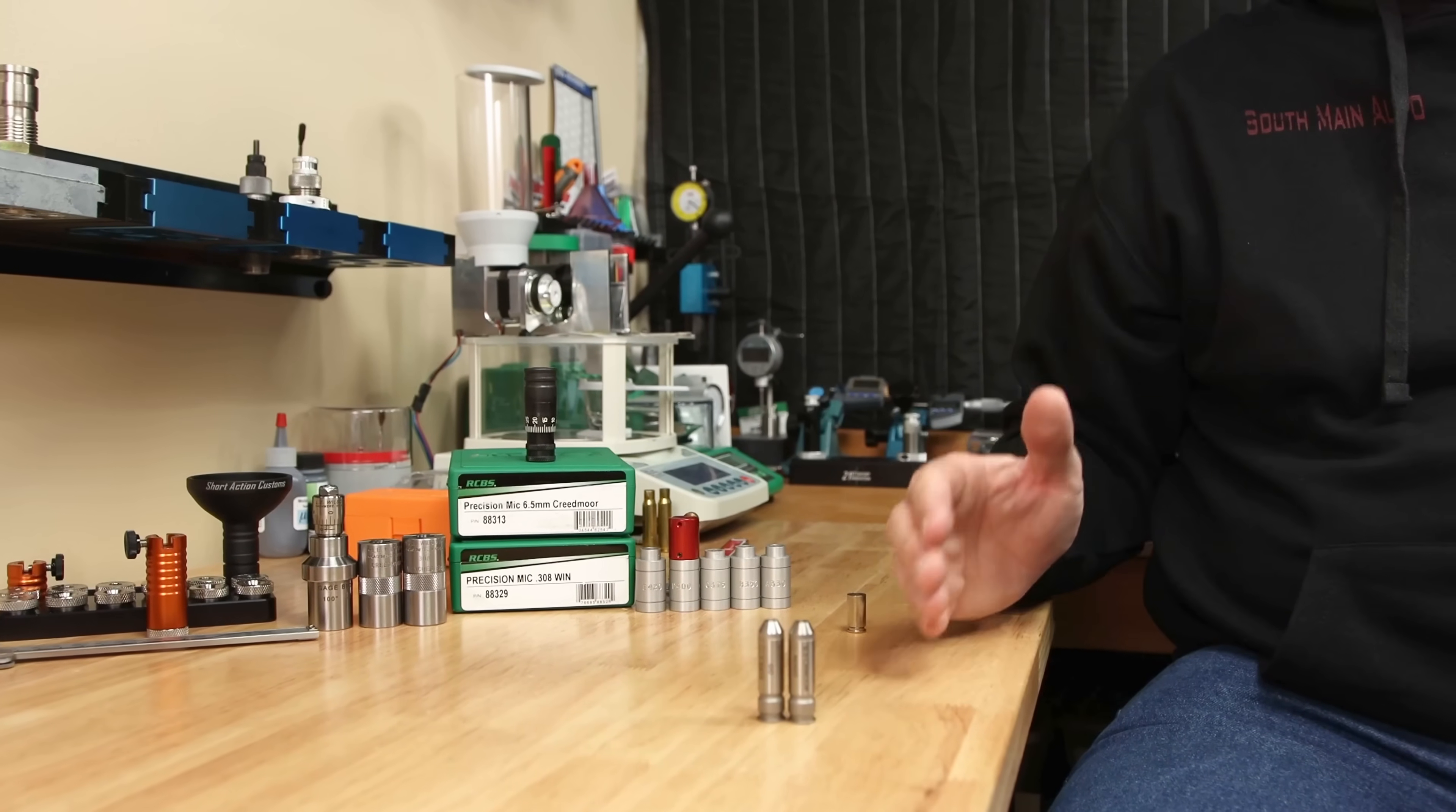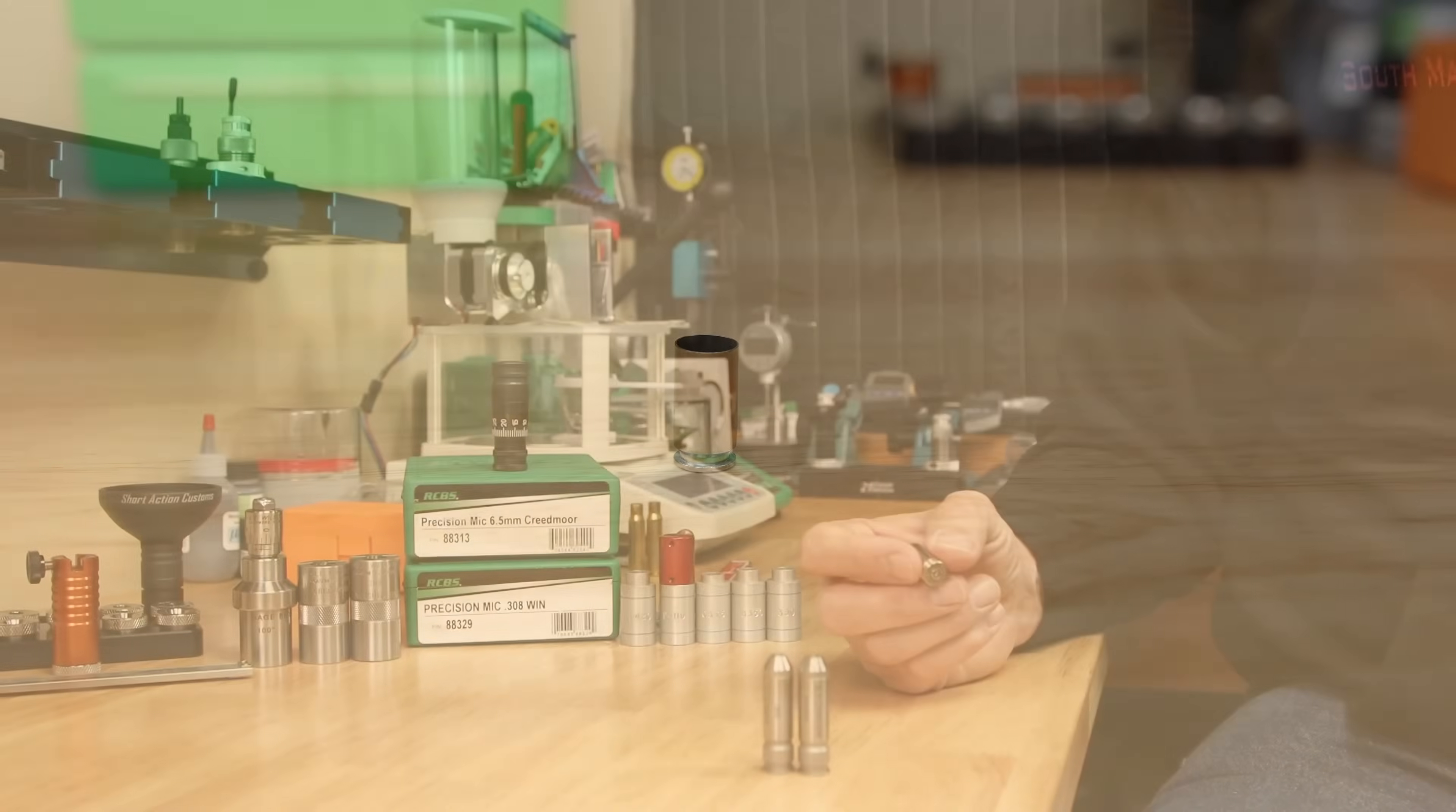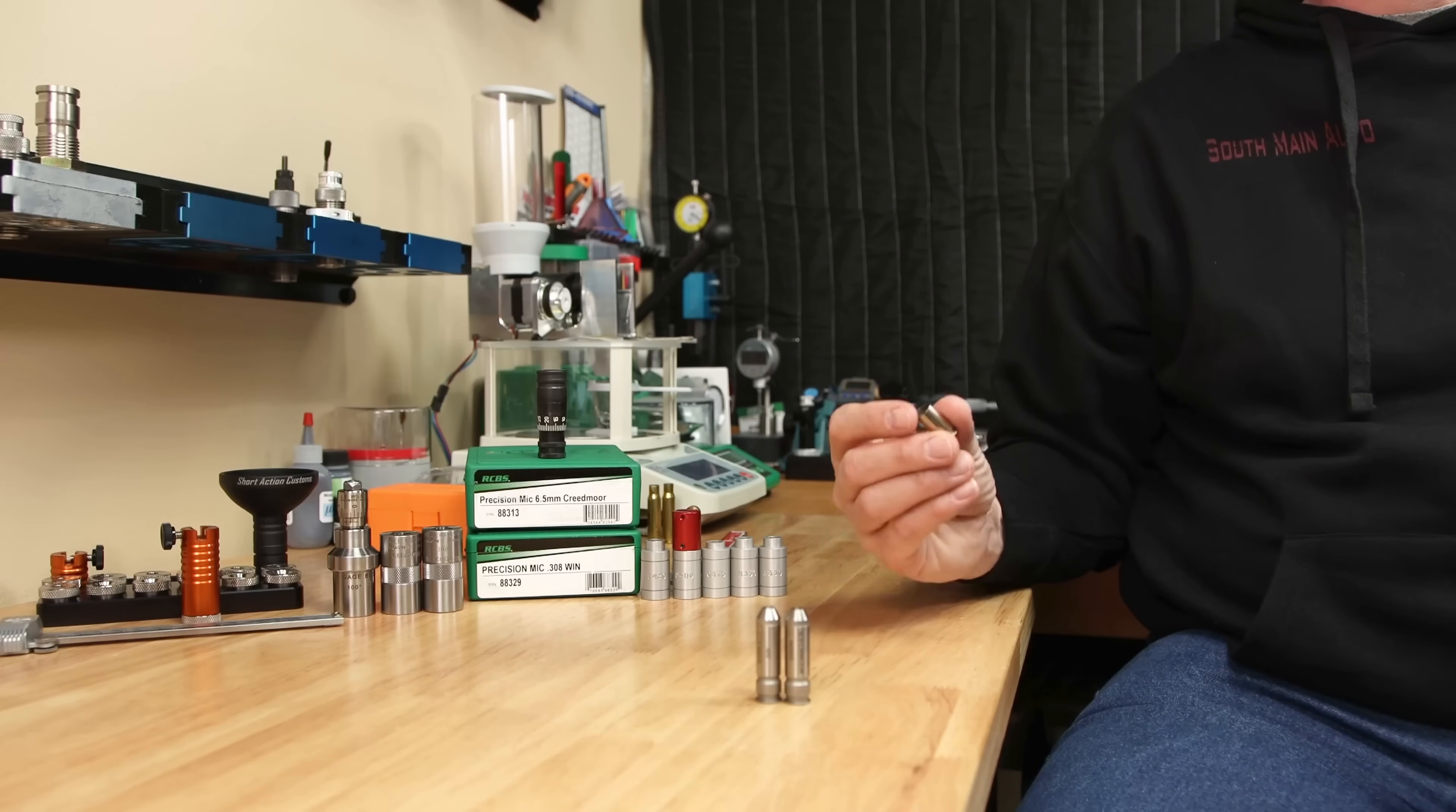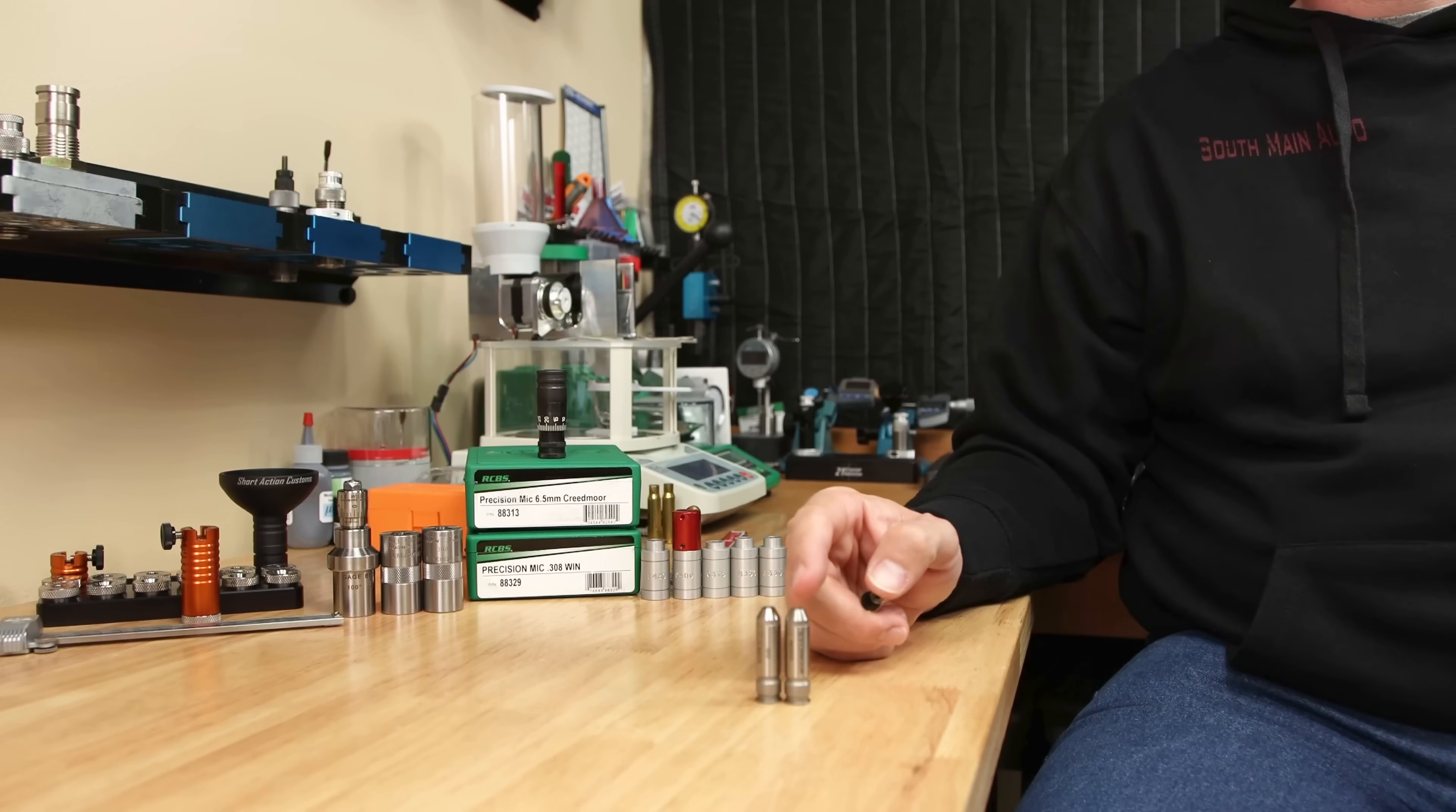Now, the absolute lowest cost thing that I could think of to take this measurement is a 40 caliber fired case. The problem is in reality, this truly won't be the exact 0.400 inches that we need from our measurement. But it's pretty close. So let's see if we can see the difference in our dimensions from our go and no-go gauges.